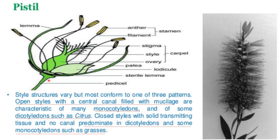Pre-pollination secretion occurs in all species, and in a minority there is additional secretion in response to pollination. Style structure varies, but most conform to one of three patterns: open style, where a central canal filled with mucilage is characteristic of many monocotyledons and some dicotyledons such as citrus; closed style, with a solid transmitting tissue and no canal, which predominates in dicotyledons and some monocotyledons such as grasses.